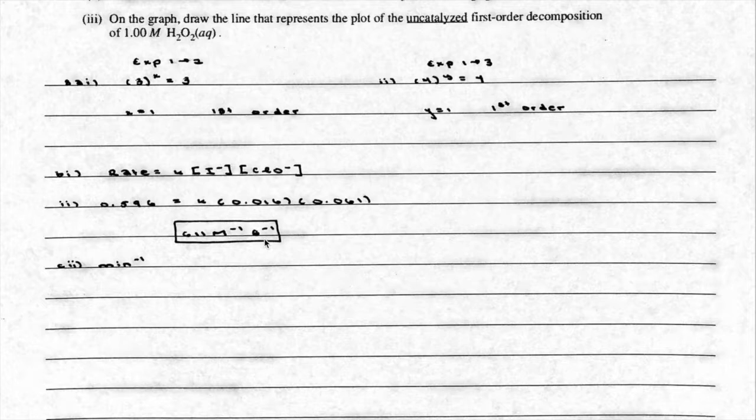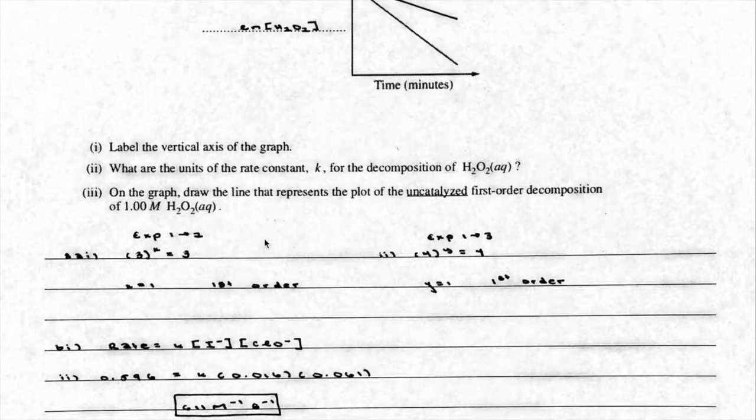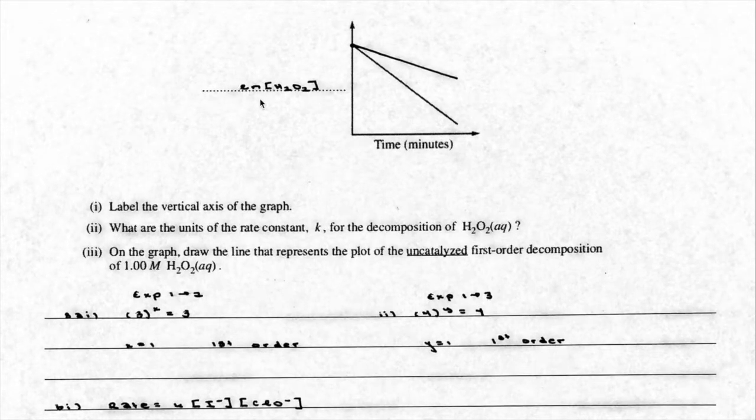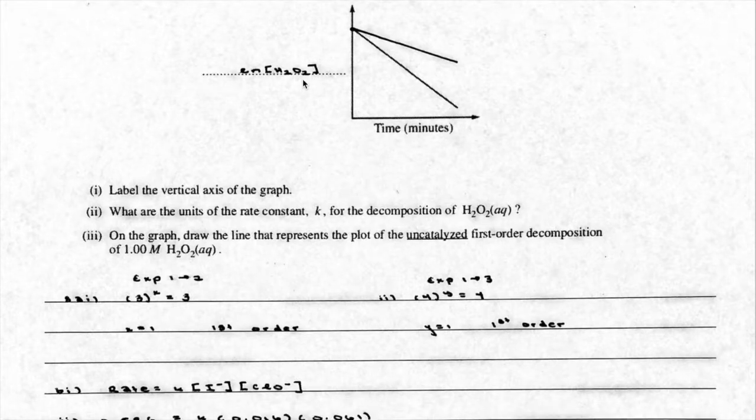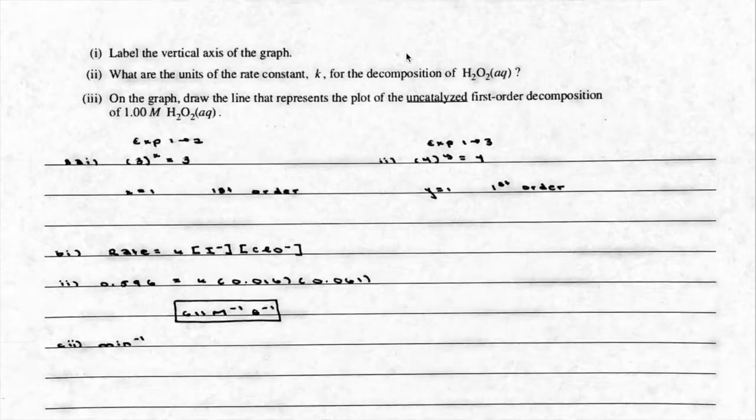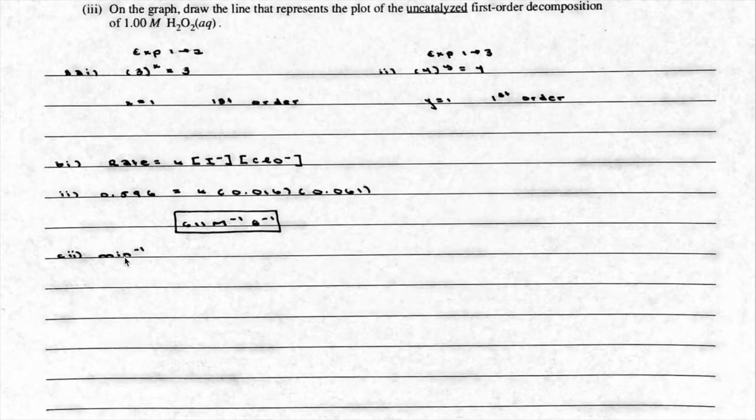For C, it gives you a whole new reaction, H2O2, and it tells you that it's first order. So it says first, label the vertical axis of this graph. So since it's first order, and this is linear, what that tells me is that my y-axis is going to be ln of the concentration of H2O2. What are the units? Well, since this is first order, and if you look at the table that was given to you here, this is minutes, my units for my k are just going to be minutes to the negative one.